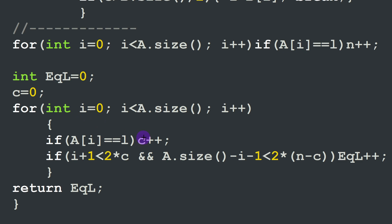We then apply our conditions: if (i + 1) is less than twice c, AND the size of a minus (i + 1) is less than twice (n minus c) — the right-side leader count — both conditions being true means we have the same leader on both sides. In that case, we increment eql by one. After processing all elements of array a, we return eql as the result.